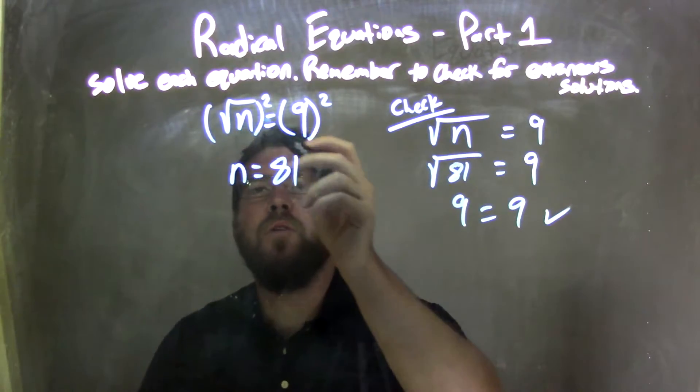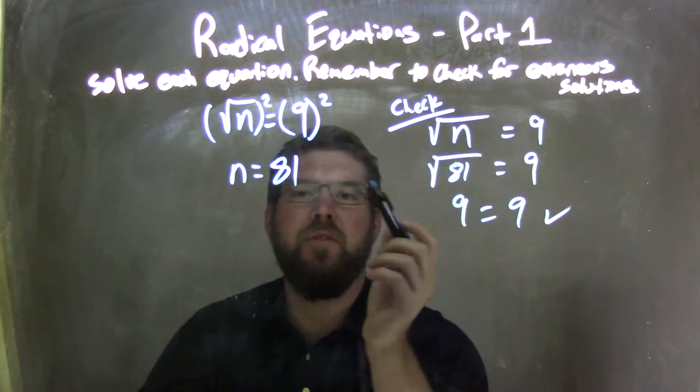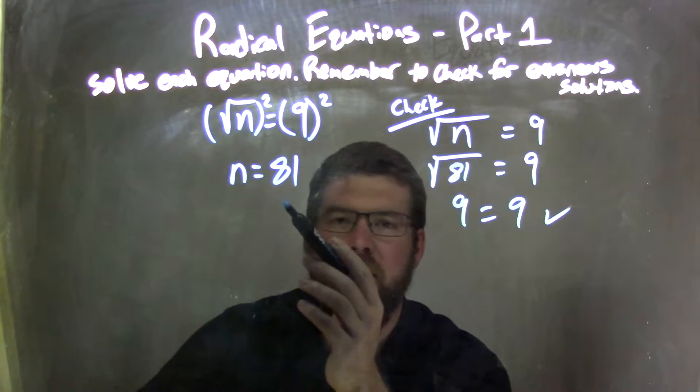So, let's recap. We start with the square root of n equals 9. I squared both sides to eliminate the square root, giving me n equals 81.